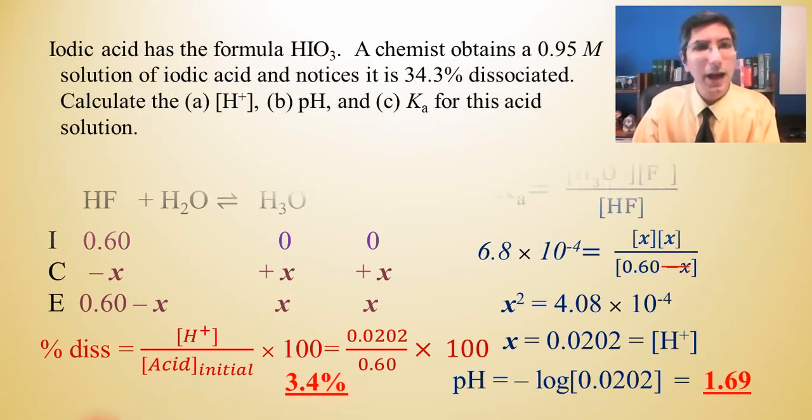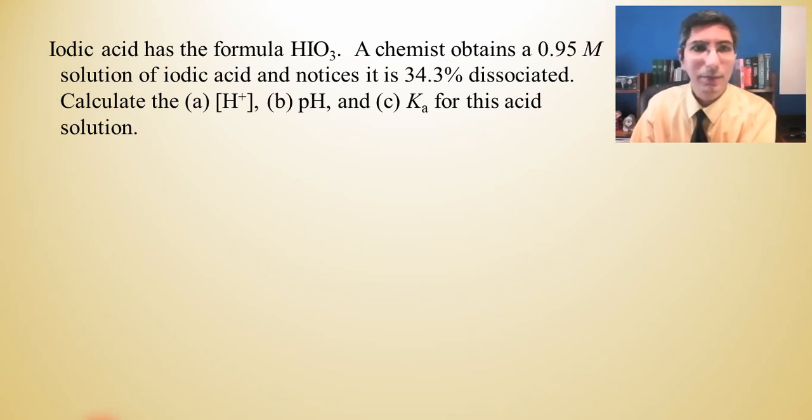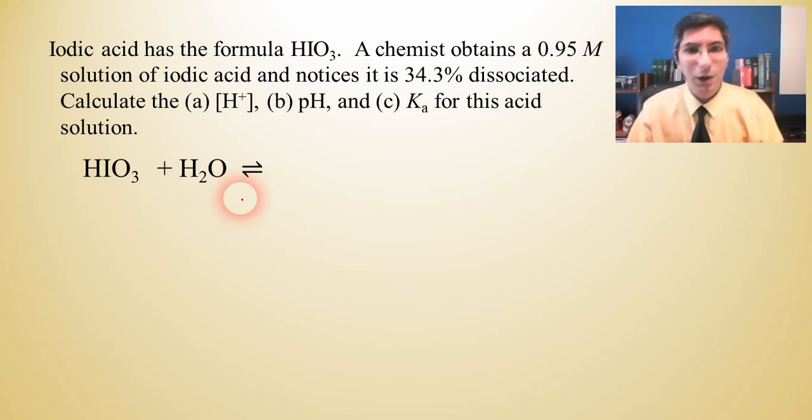Now let's work another problem. Let's say we have iodic acid and it has the formula HIO3. A chemist obtains a 0.95 molar solution of iodic acid and notices that it is 34.3% dissociated, so way more than 5%. Calculate H+, pH, and Ka for this acid solution at this temperature. It might be a good idea to write out our acid dissociation reaction, even though it's not specifically calling for that. We have our HIO3. It's being added to water and the products are always hydronium and the conjugate base, which is IO3- in this case.